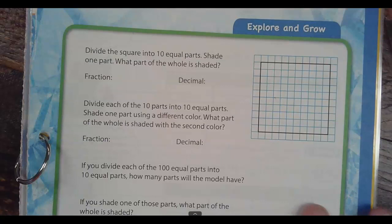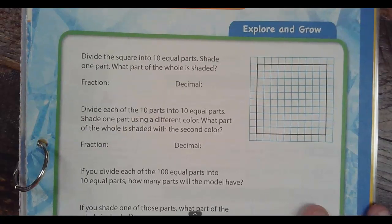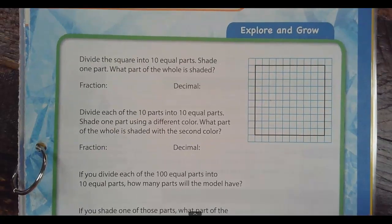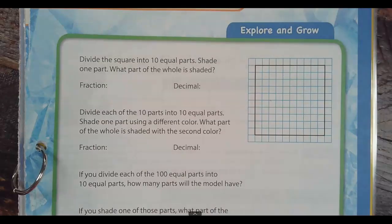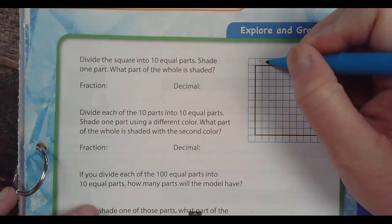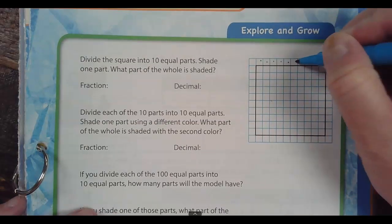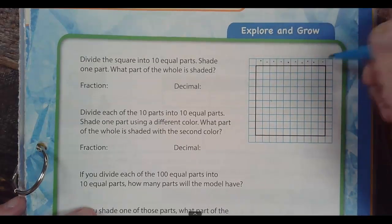We're going to divide this square into ten equal parts. I'm going to use blue. Let's count how many are in the square: one, two, three, four, five, six, seven, eight, nine, ten. There's ten.